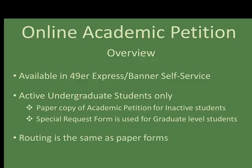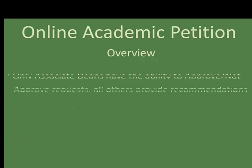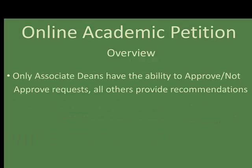Routing for the online academic petition is just like the paper forms — it is simply routed through an online process. Only associate deans have the ability to approve or not approve requests; all others are responsible for providing recommendations.